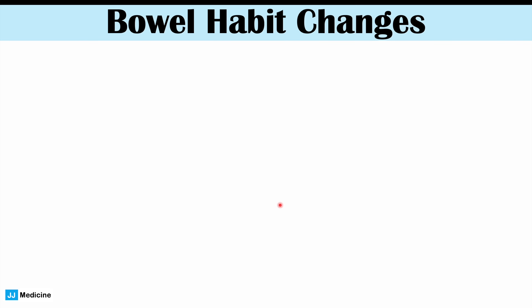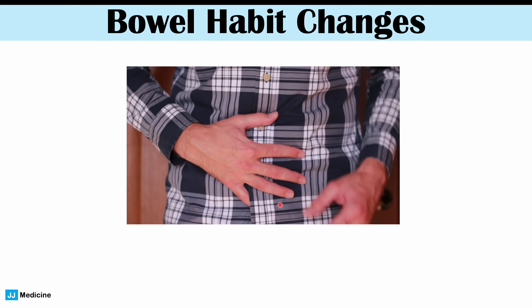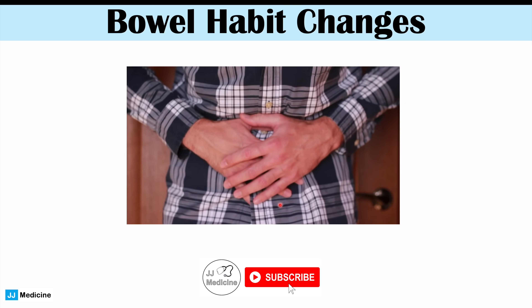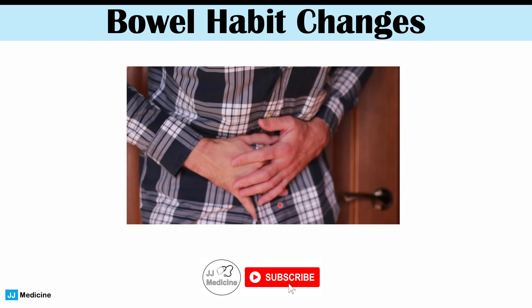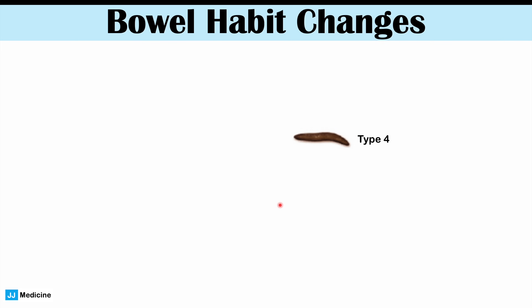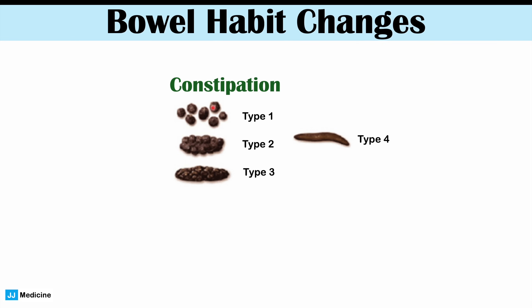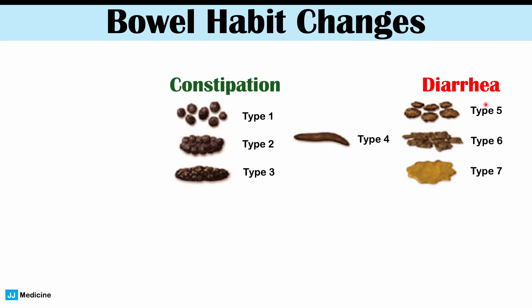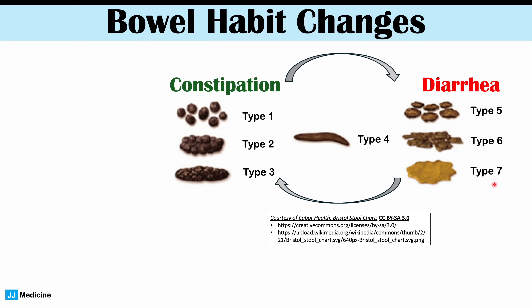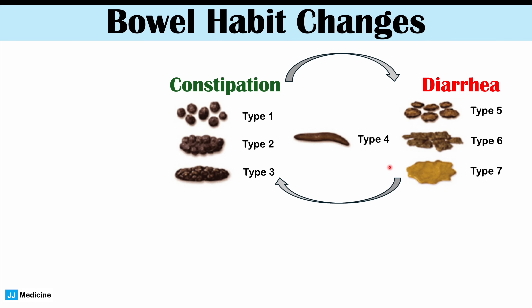One of the earliest symptoms of an acute diverticulitis flare is bowel habit changes — you may notice a change in the consistency or frequency of defecation. Using the Bristol stool chart, type 4 stool is normal; types 1–3 indicate constipation; types 5–7 indicate diarrhea. In a flare, you'll get changes in when you use the washroom and the consistency of your stool. Constipation is often seen first, and alternation with diarrhea can also occur.